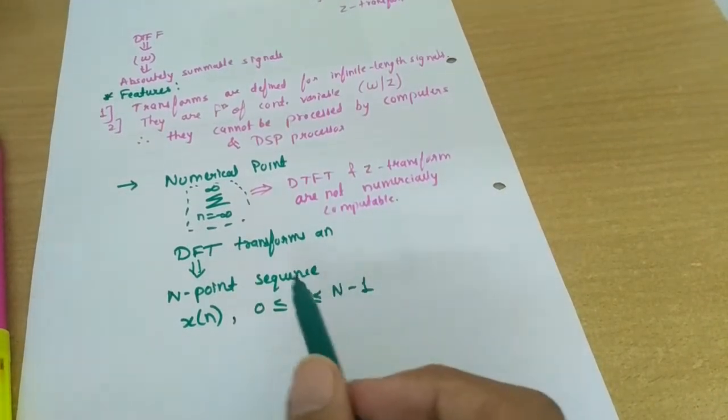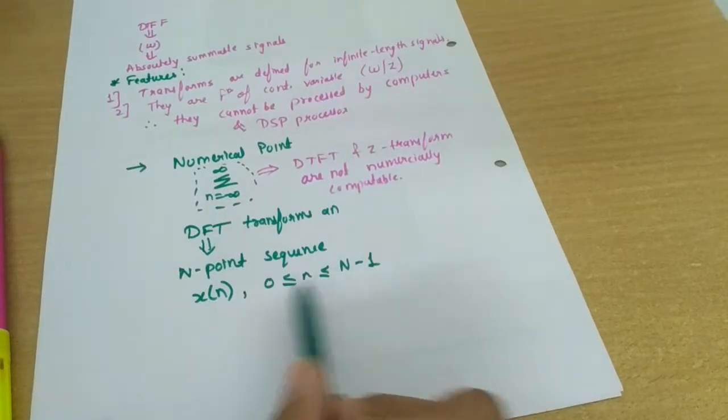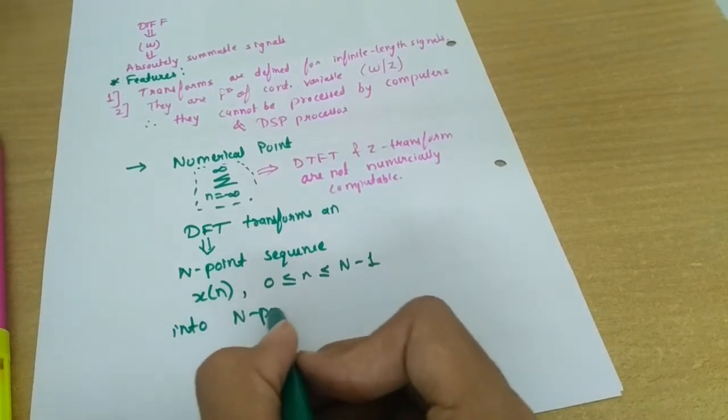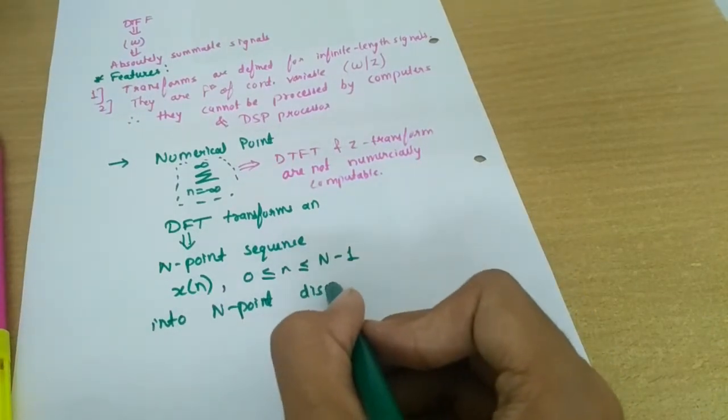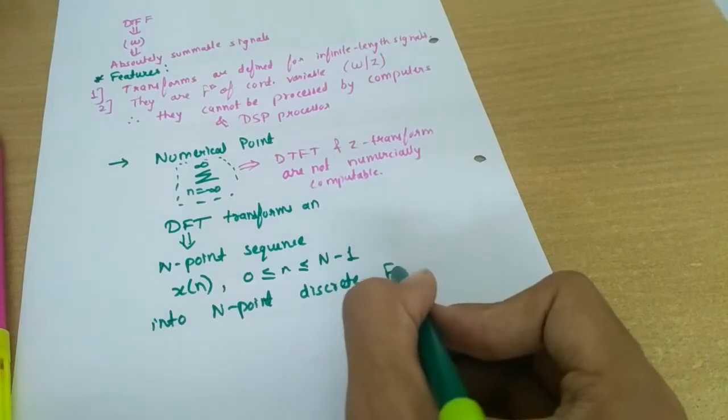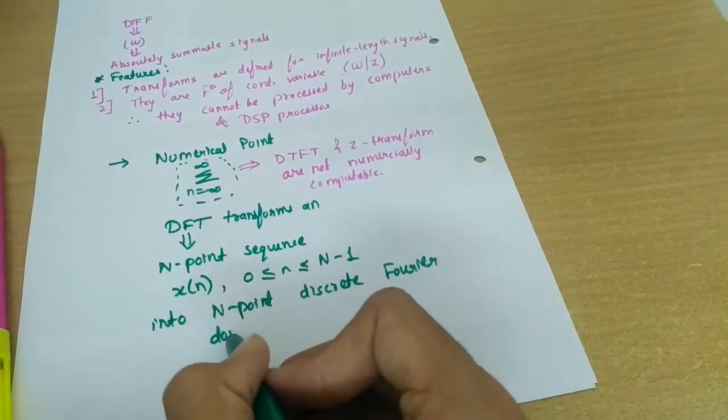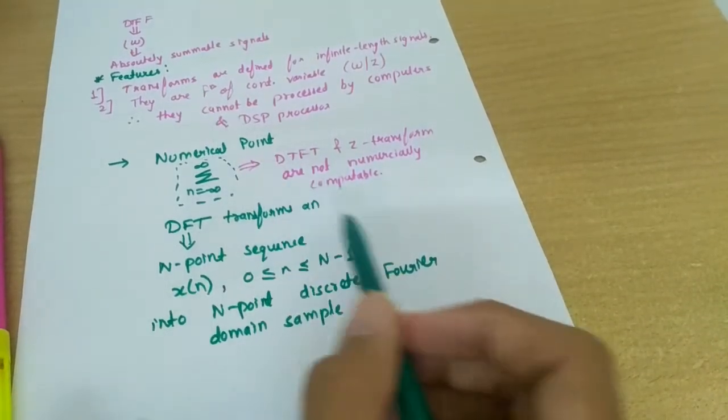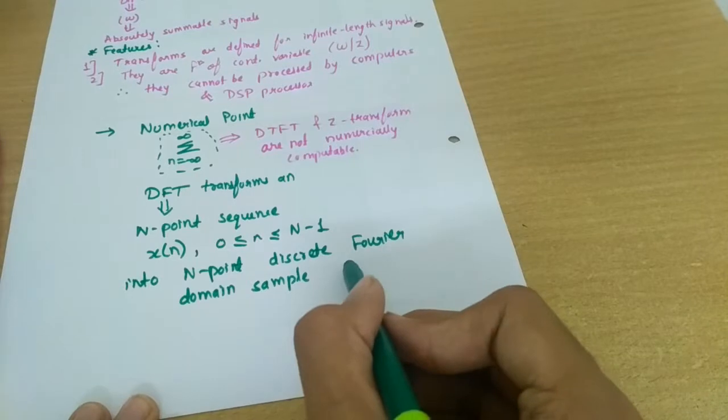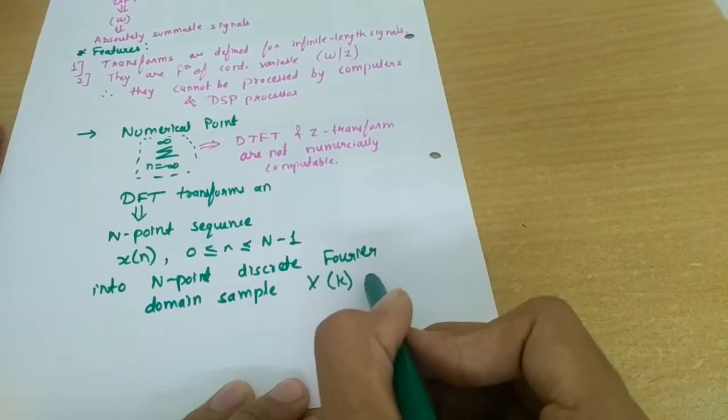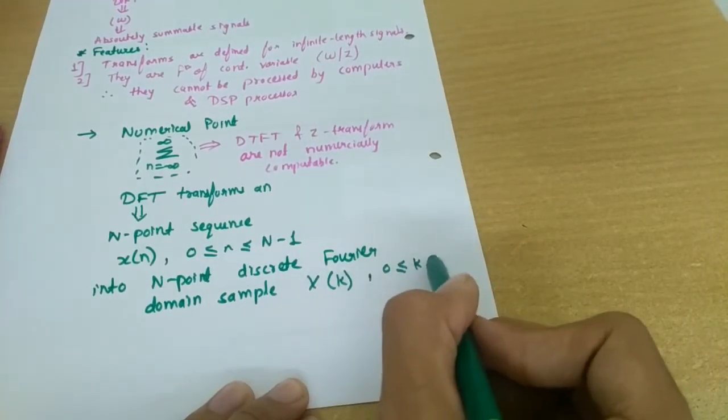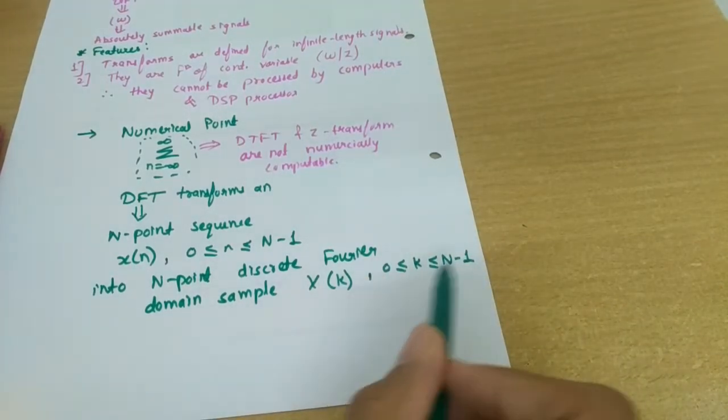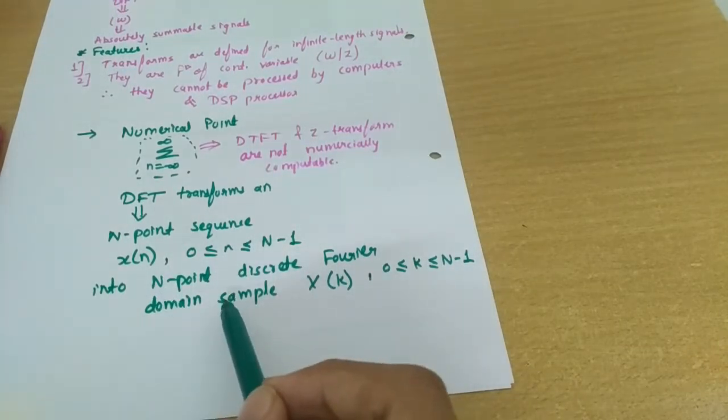So what DFT do? DFT transforms this n-point sequence into n-point discrete domain samples or we can say discrete Fourier domain samples. And in order to differentiate this DTFT and DFT, we denote it by X of K where this is the beauty that K is also belonging from 0 to n minus 1, that is n terms only, and that is the reason that is called n-point DFT also.